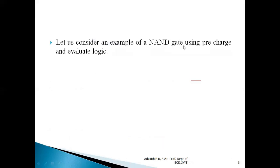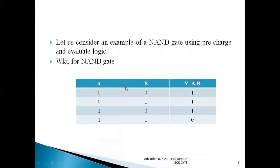We can understand this pre-charge and evaluate technique by making use of a NAND gate example. For a two-input NAND gate, when both inputs are high the output is low; for all other input combinations the output is high. This NAND gate can be implemented using pre-charge and evaluate technique. Before understanding that circuit, we already know how a NAND gate can be implemented using standard CMOS logic.